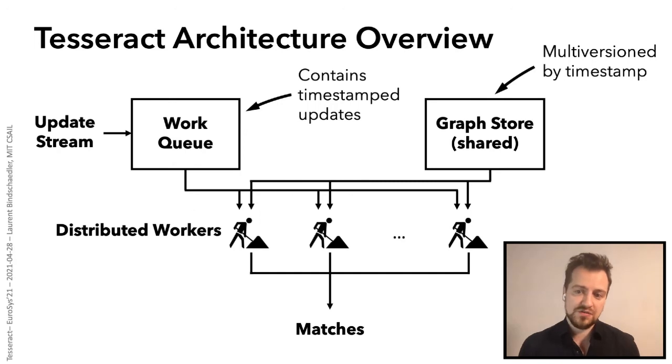Now to sum up, here is Tesseract's system architecture at a high level. So the system receives a stream of updates that it timestamps in increasing order. Each update is then added into a shared multi-version graph store that tracks the state of the input graph over time and then the update is inserted into a work queue. After that we have distributed workers that can fetch updates from the work queue and compute the changes to the match set by exploring the graph just as I described before. Now an important thing here is that the graph store is not partitioned across workers but it's kept separately. That means any worker can always read any part of the graph. Finally, the output of the system is simply a stream of changes to the match set that are ordered by timestamp.